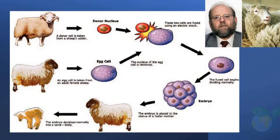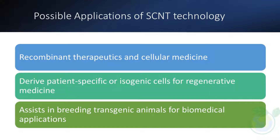The efficiency of SCNT needs improvements to exploit its copious potential in biomedical sciences. Apart from paving the ways to augment stem cell research and therapies, somatic cell nuclear transfer holds unique ability for a wide range of health applications, such as patient-specific or isogenic cells for regenerative medicine and breeding transgenic animals for biomedical applications. Being a potent cell genome reprogramming tool, SCNT has increased the prominence of recombinant therapeutics and cellular medicine.